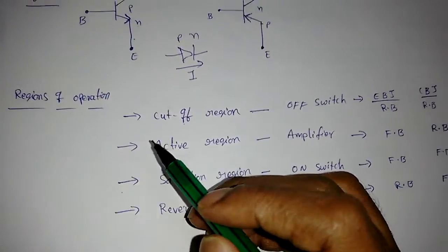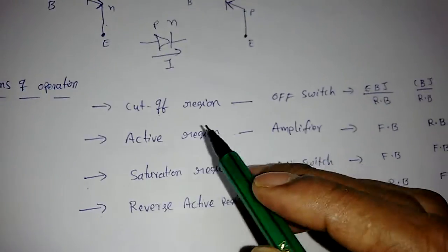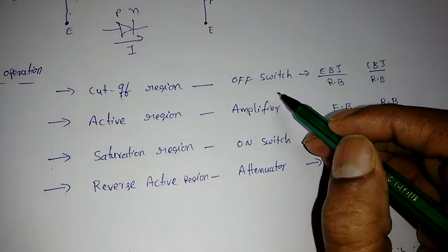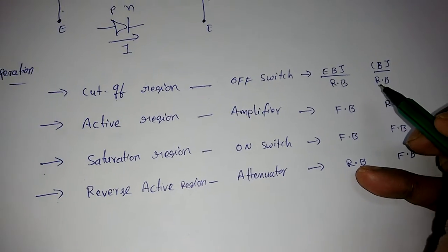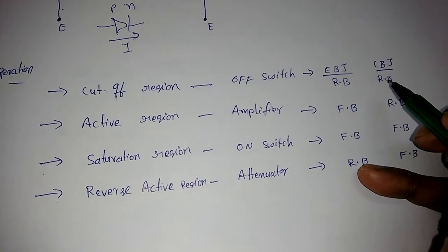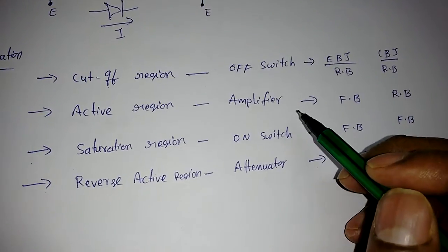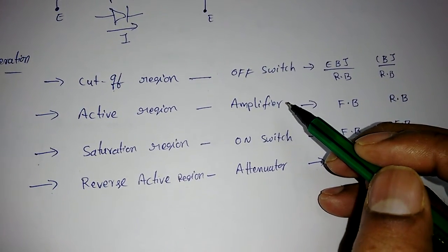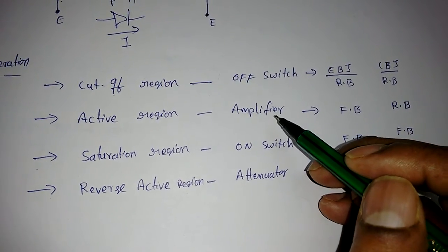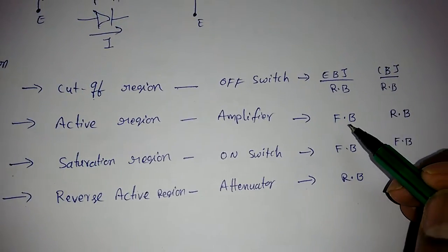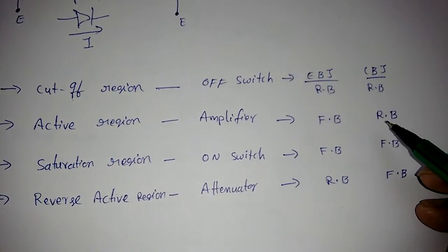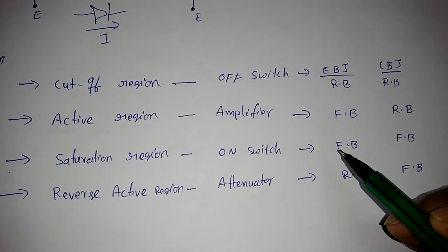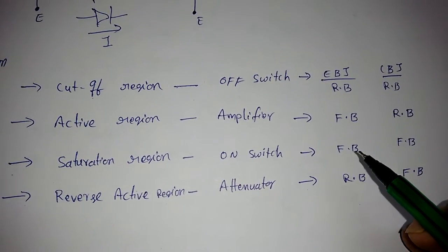There are four modes of operation of a BJT. In the cutoff region it acts like an off switch — both junctions are reverse biased so current is approximately zero. In the active region it acts as an amplifier: a small change at the input gives a large change at the output. For active region, the emitter-base junction should be forward biased and the collector-base junction should be reverse biased.